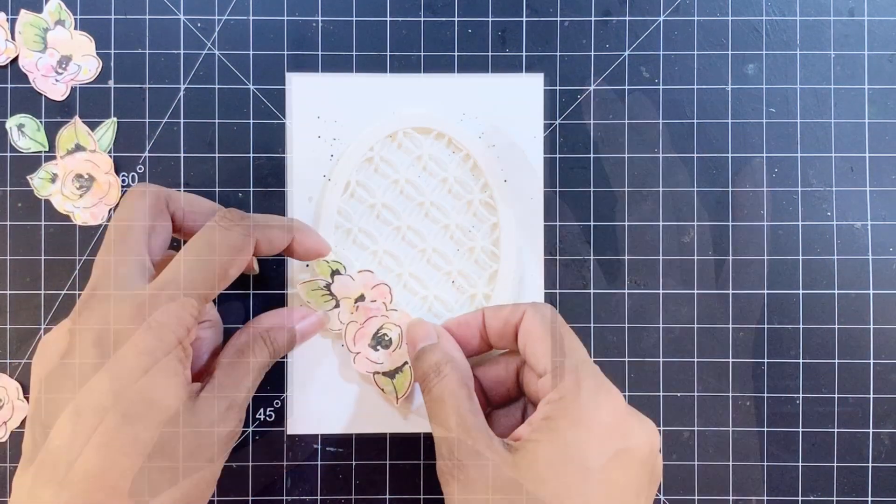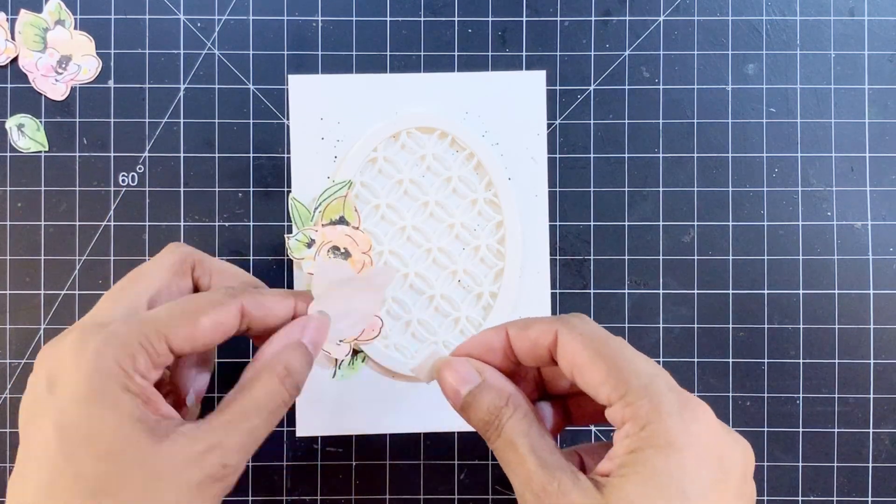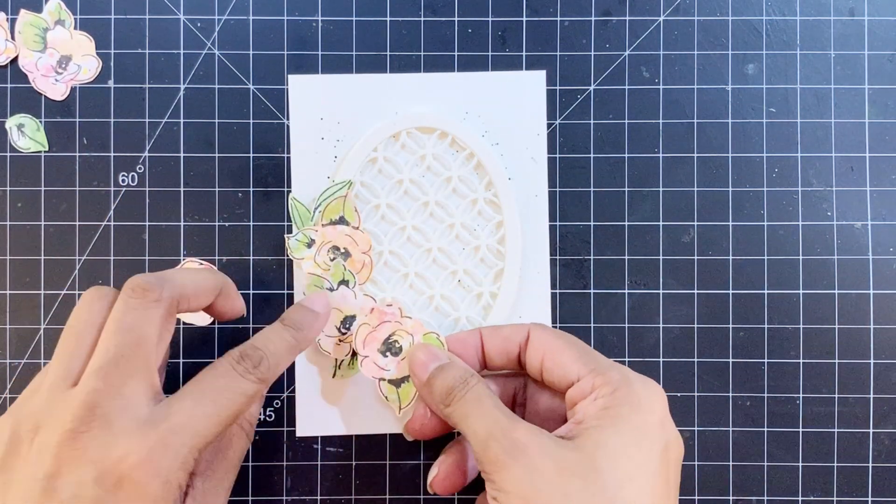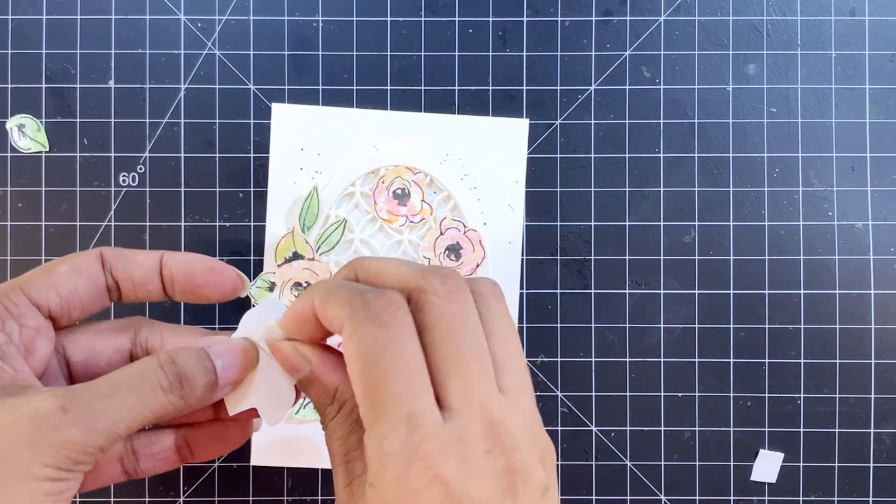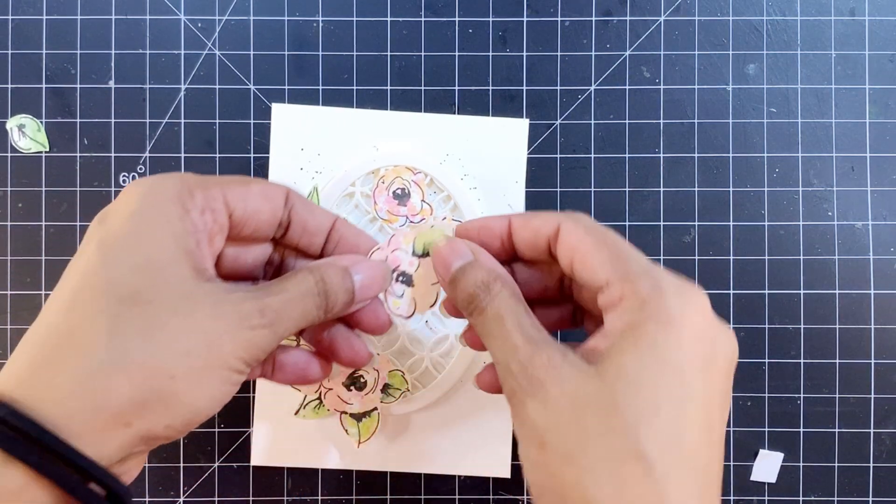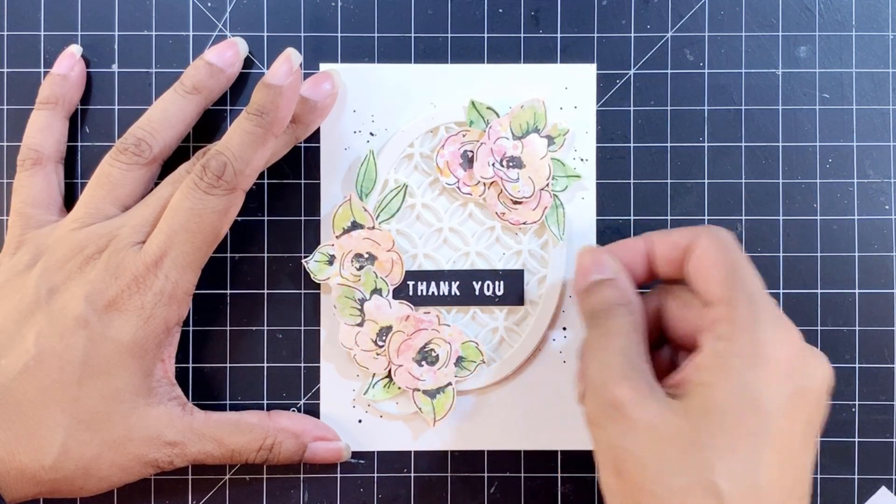After this I'll start arranging all the flowers and leaves on foam tape. Some on two layers of foam tape, some on one layer and most of the leaves will be glued directly. In the end I'll add a sentiment and also some gold confetti for bling. And that is all for today.